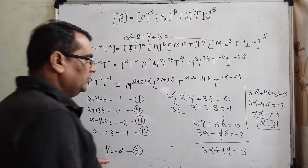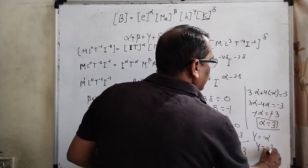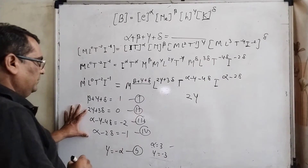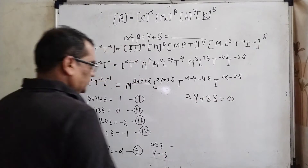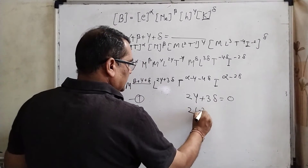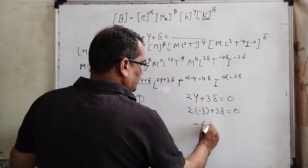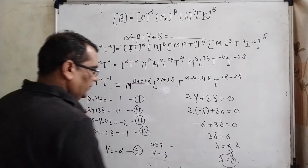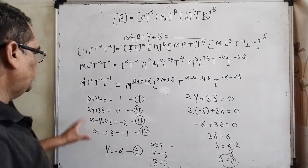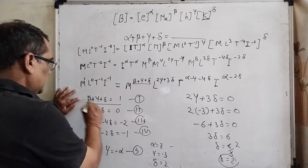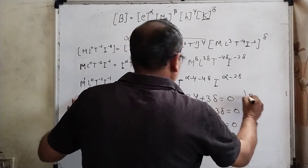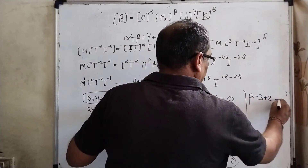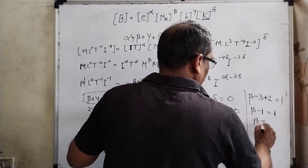So we get α = 3. Since γ = −α, we have γ = −3. Now substitute γ = −3 into equation 2: 2(−3) + 3δ = 0, so −6 + 3δ = 0, which gives 3δ = 6, so δ = 2. Now substitute into equation 1: β + γ + δ = 1, which is β + (−3) + 2 = 1, so β − 1 = 1, giving β = 2.